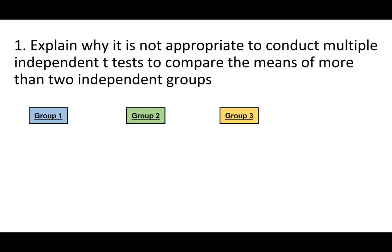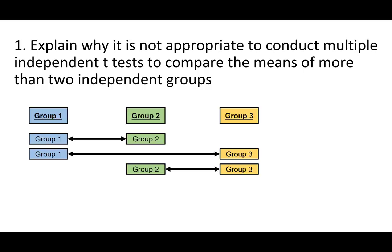For example, if we had three groups, we would need to do three separate independent means t-tests to make all the possible pairwise comparisons. The actual overall alpha level is not exactly additive, but here the actual overall alpha level would be close to 0.15. Running three independent t-tests, each with a 0.05 alpha level, if there were no significant differences in the population, the probability of obtaining at least one significant result is 0.143.